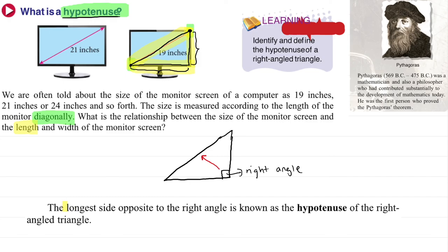So there are two characteristics. The first is that it is the longest side. The second is that it is opposite to the right angle. When both these characteristics are present, we can say that side is the hypotenuse.